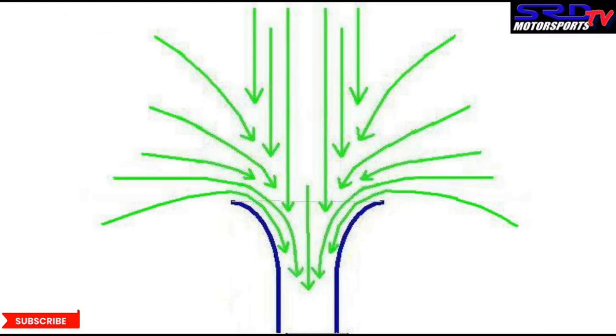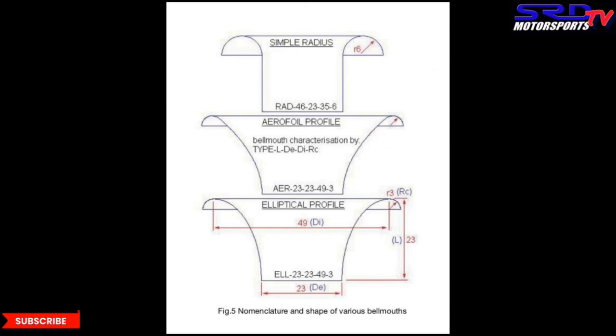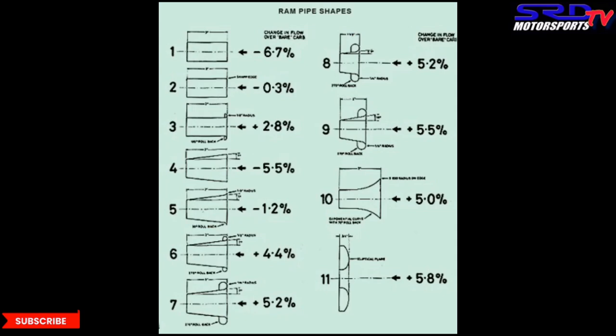Going back to the velocity stack — as you remember from Gordon P. Blair's study and diagram, we know which one works. But look at this diagram: numbers 6, 7, 8, 9 are getting good; number 10 is only better with number 6. But look at number 11 — it's positive 5.8% for a RAM pipe or velocity stack. You can see how it tapers or curves outward, letting you pull air even from the sides or below the horizontal plane. This is what's going to work really well on the dyno.